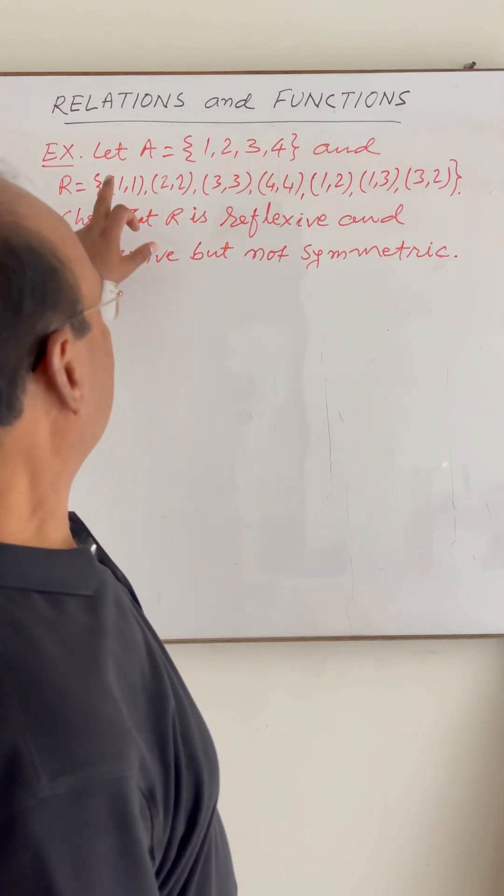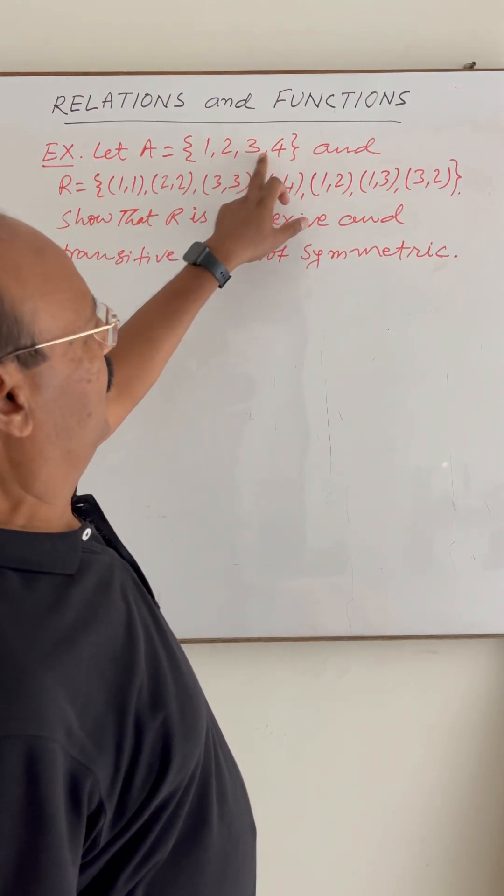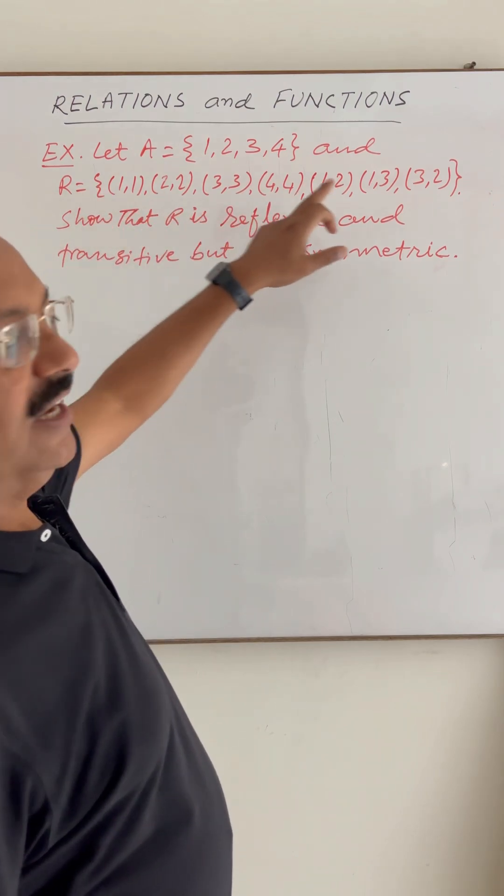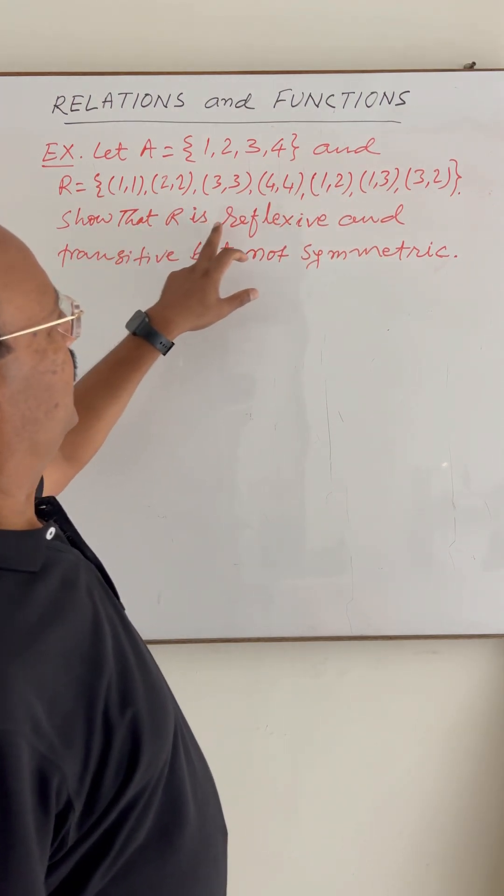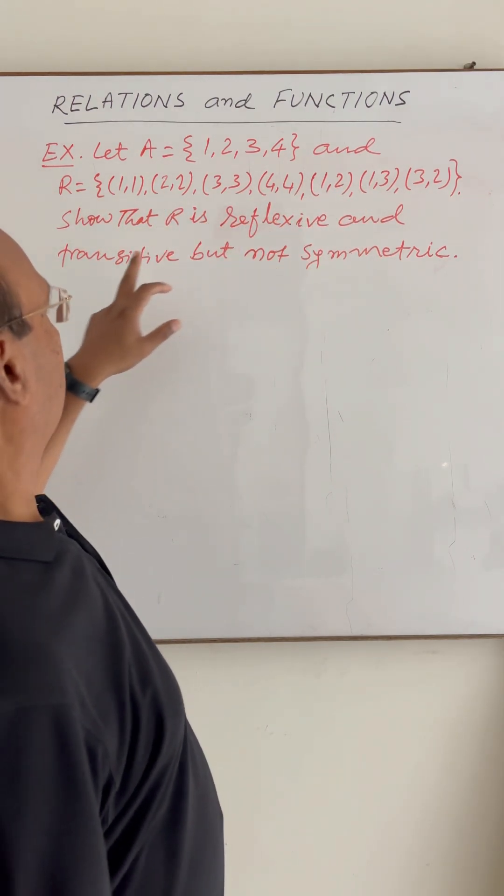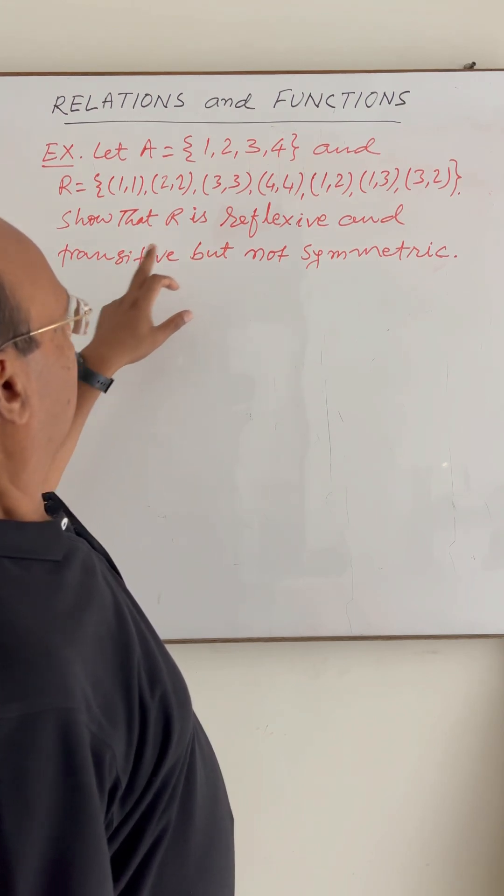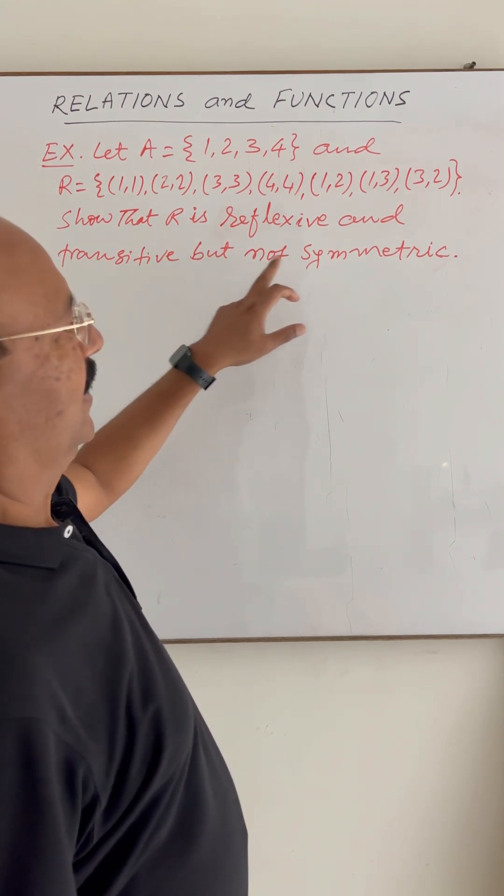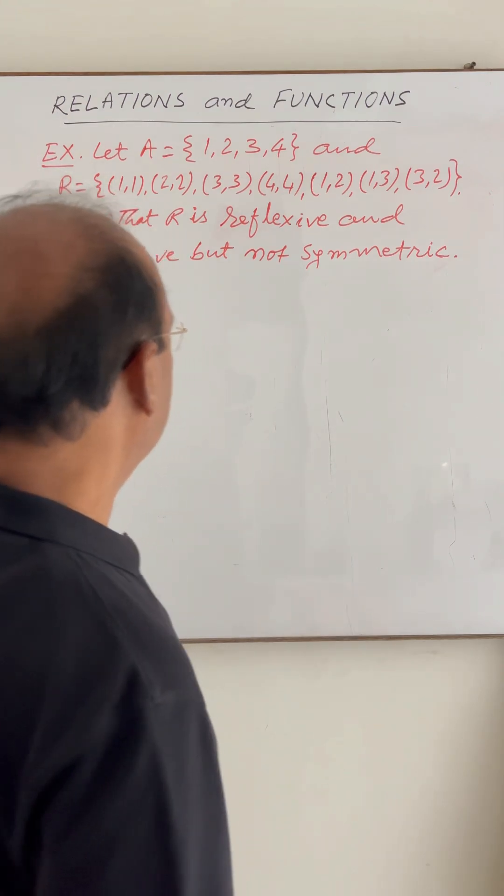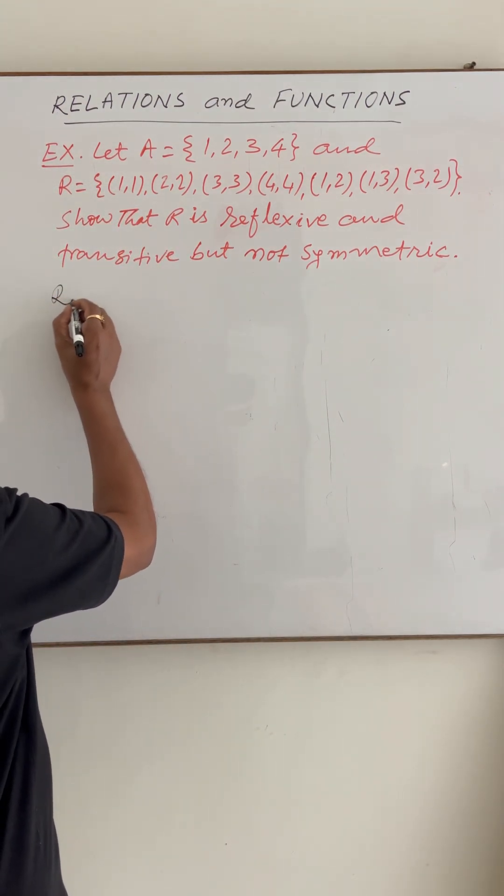Hello students, here the question is: set A has elements 1, 2, 3, 4 and relation R is given. We have to show that this relation is reflexive and transitive but not symmetric. So first of all, let us show that this is reflexive.